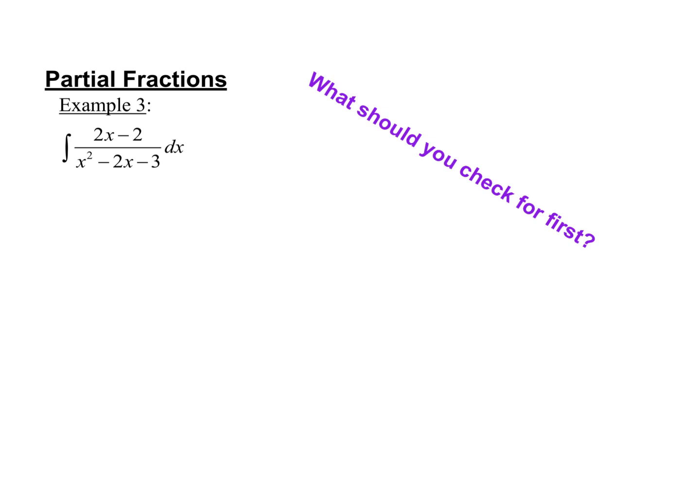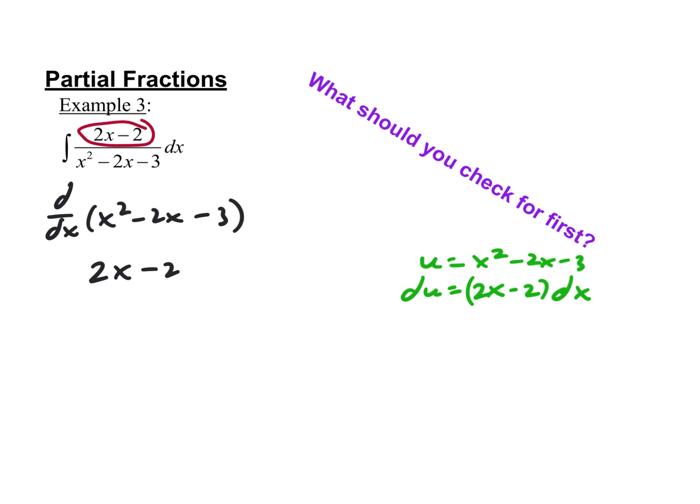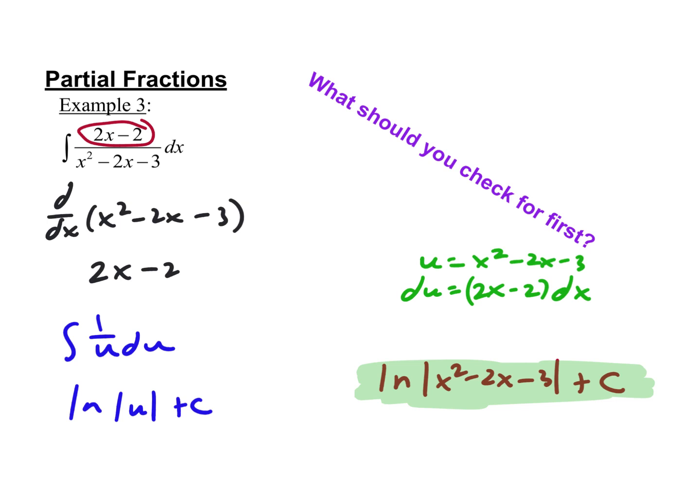So if you check that, then maybe we're going to get lucky every once in a while. Sometimes we get in this pattern like, we're doing partial fractions now so all the problems will be partial fractions — but you've got to think through it. Since we get 2x minus 2 out of it, u-substitution works really easy here. With u-substitution, u is going to be this, du is going to be that — pretty straightforward. Natural log of the absolute value of u, then substitute back. Sometimes that's going to happen, so just look out for that.